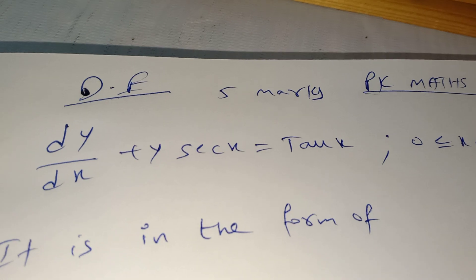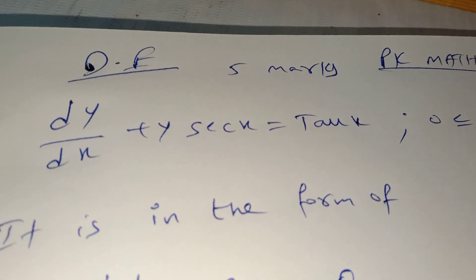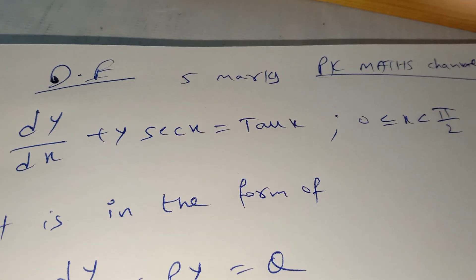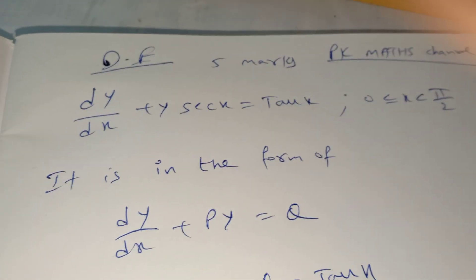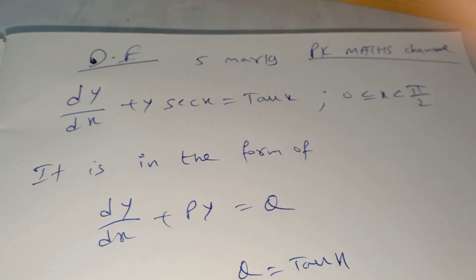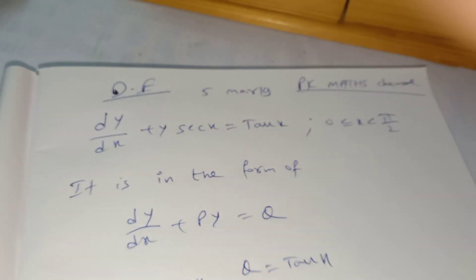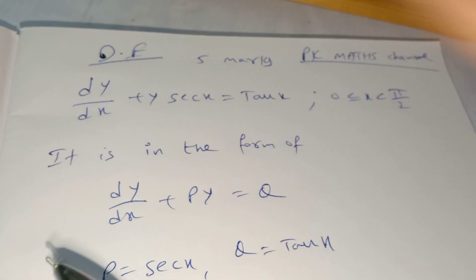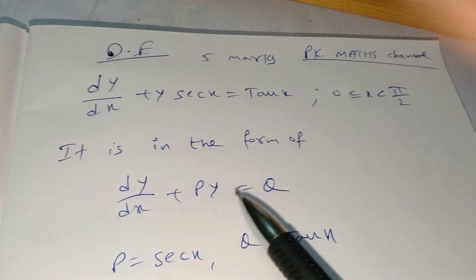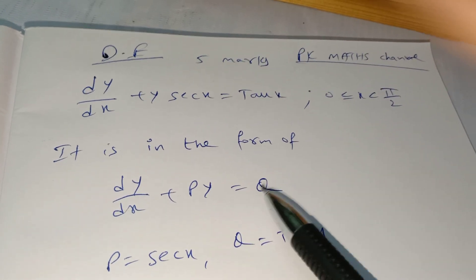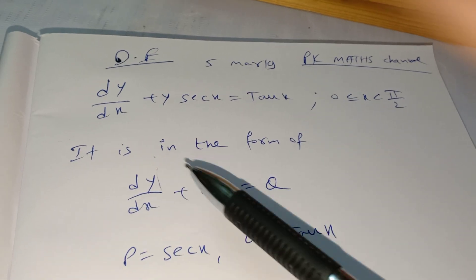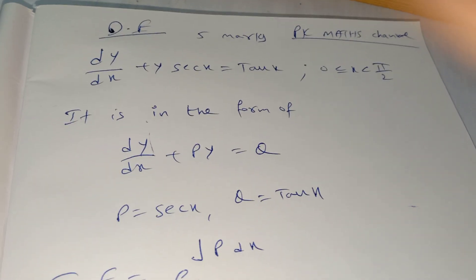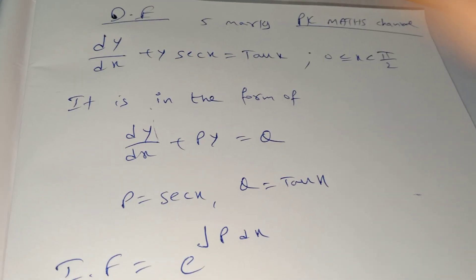The question is: dy/dx + y·sec(x) = tan(x), where 0 ≤ x < π/2. This is in the standard form dy/dx + Py = Q, where P = sec(x) and Q = tan(x).